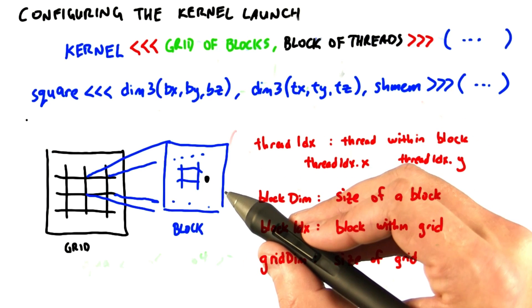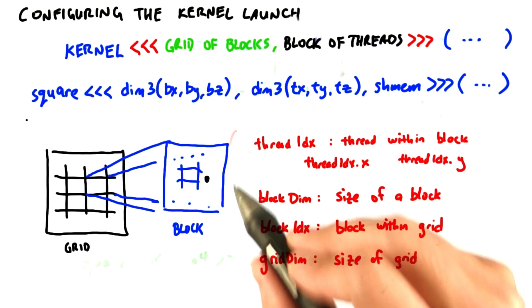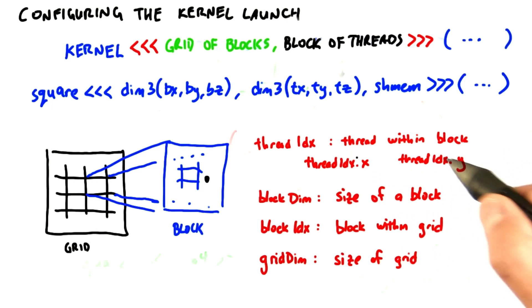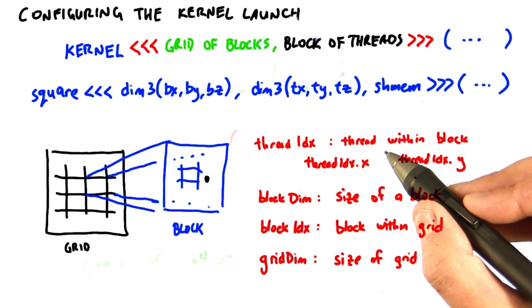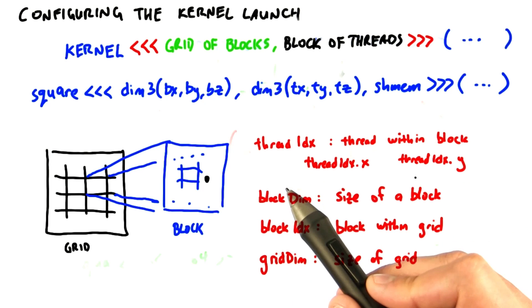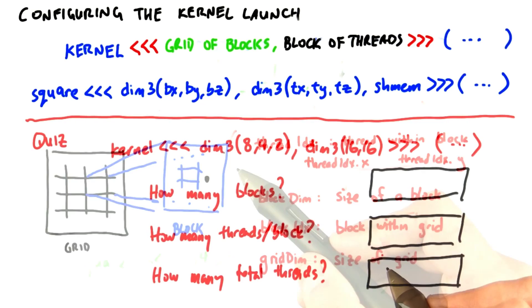What I want you to take home from this discussion is the following. It's convenient to have multidimensional grids and blocks when your problem has multiple dimensions. CUDA implements this natively and efficiently. When you call threadIdx.x or blockDim.y, that's very efficient within CUDA. Since we're doing image processing in this course, you should be counting on defining a lot of two-dimensional grids and blocks.